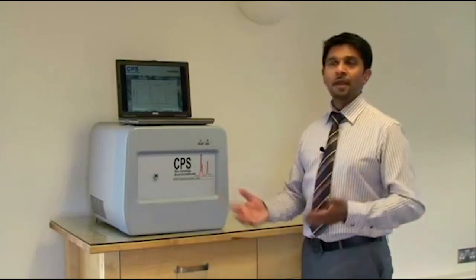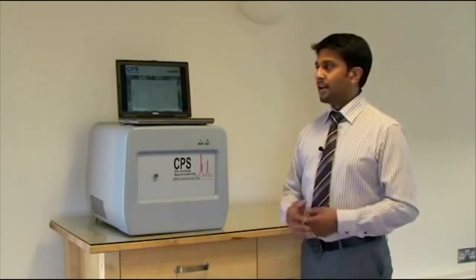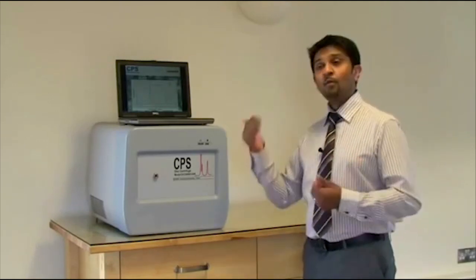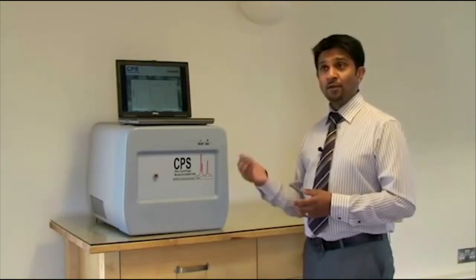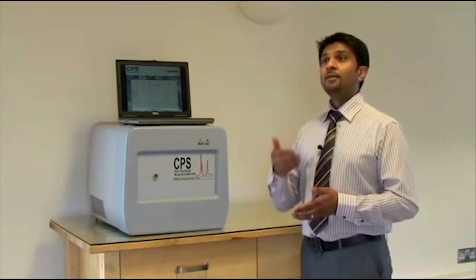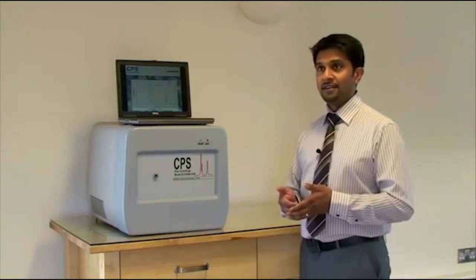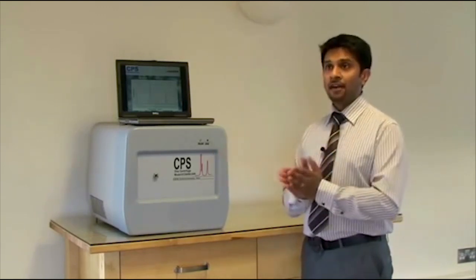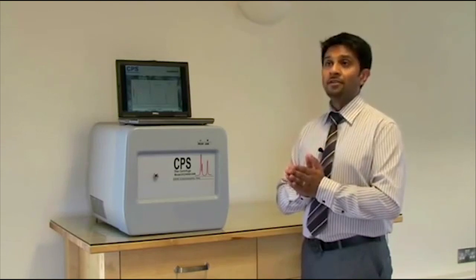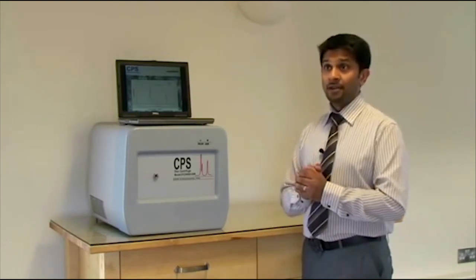Each time the instrument is used it may be used at a different disk speed, may have a different gradient, different user. Why do we get the same results? The reason for this is because before we run a sample we always calibrate the instrument, meaning we run a sample of known size and known density and we are able to use this to convert the time axis to particle size for the material that you're examining.